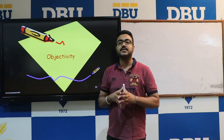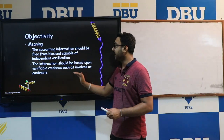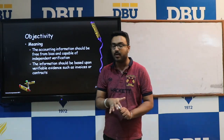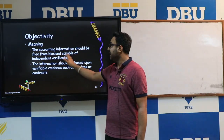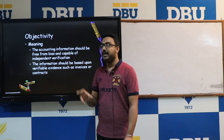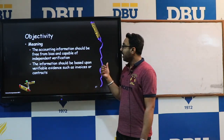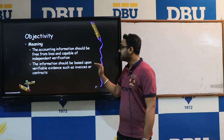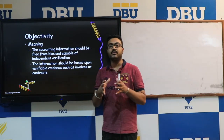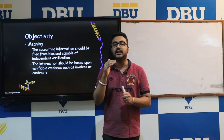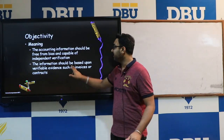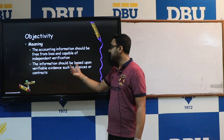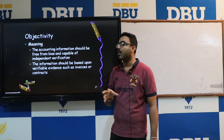The next accounting concept is Objectivity. Objectivity means the accounting information which you want to record in the books of accounts should be free from bias, as well as it is capable of independent verification. The information should be based on verifiable evidences such as invoices or contracts.